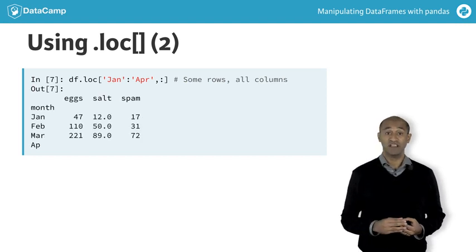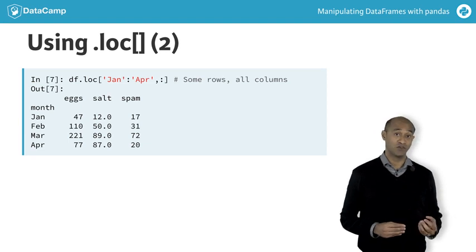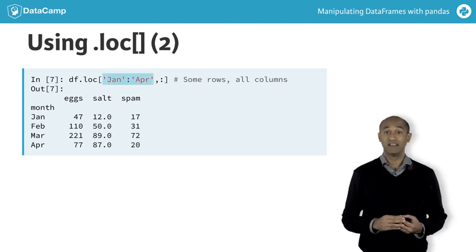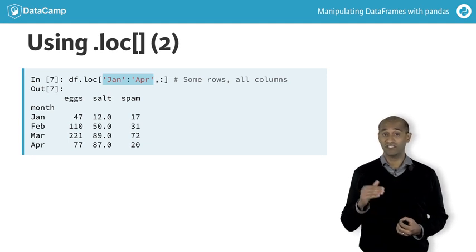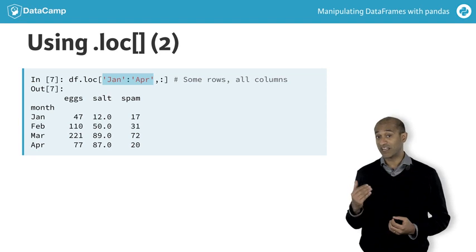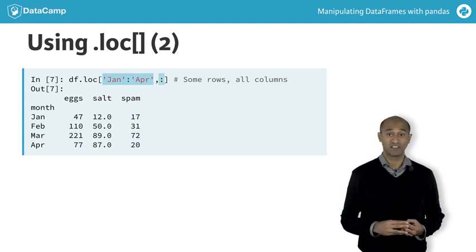This example is similar in using the .loc accessor to slice all columns in some rows. The first slice, Jan:April, extracts all four rows corresponding to January, February, March, and April inclusive. The second bare colon is a universal slice selecting all columns.